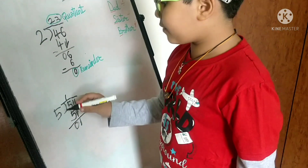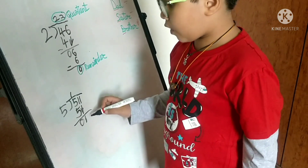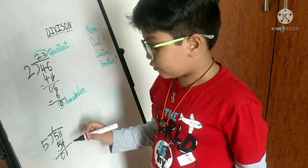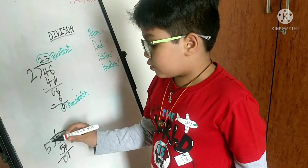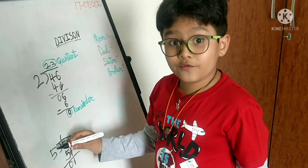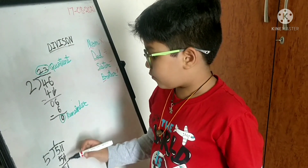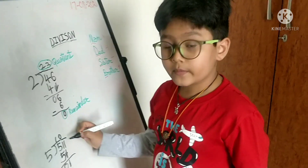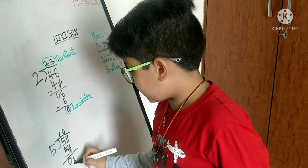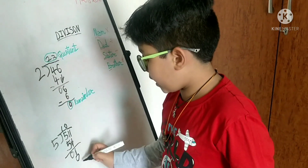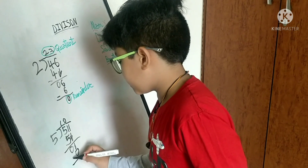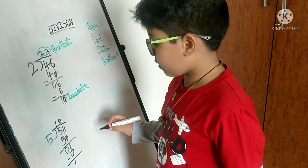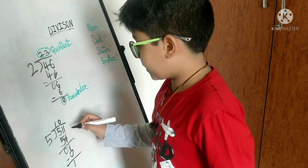Now in 5's table we will not even get 1 at all, because it is a lesser number than 5. So you have to multiply 5 with 0. 5 zeros are 0. Next, 0 will come here and 1. Next step is subtraction: 1 minus 0 is 1. Now again bring it down.